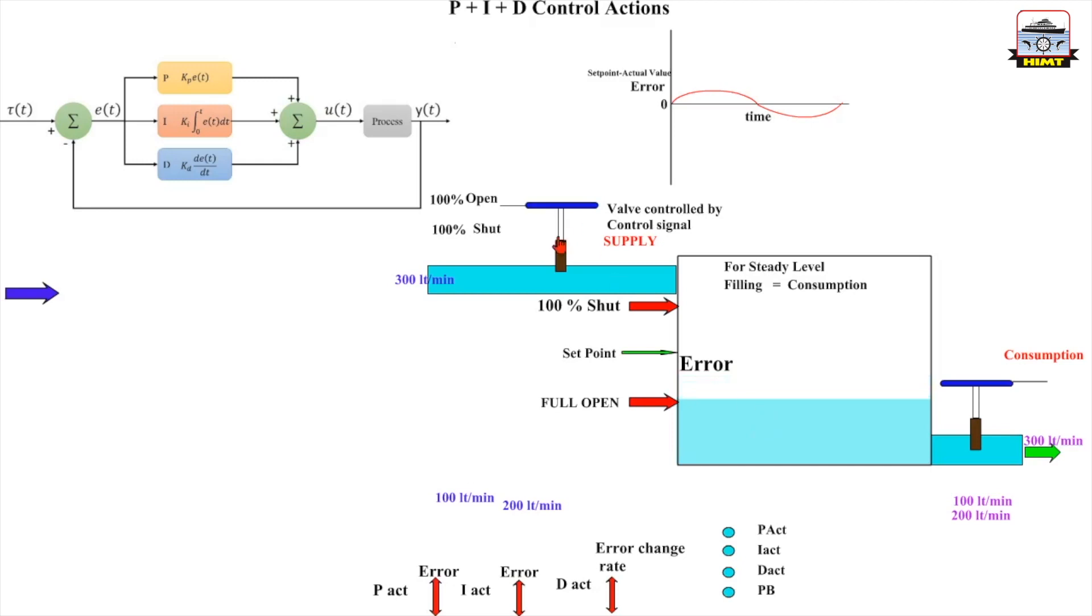Now suppose I had linked the proportional action in such a way that when the error is so much, the valve will be full open. And when the level is very high here, the valve will be full shut.